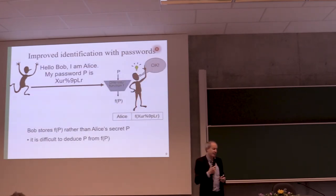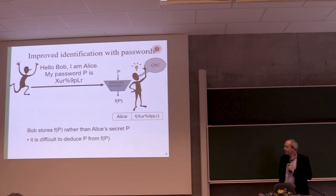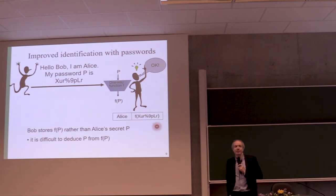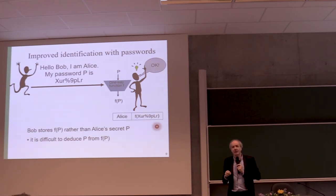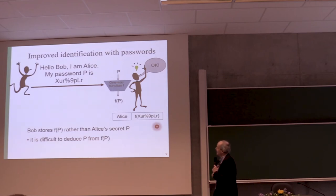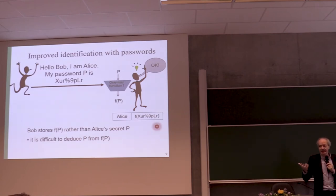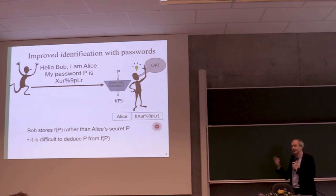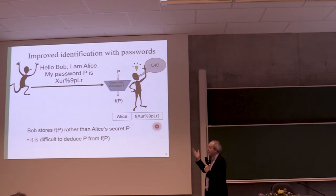A simple improvement is to not store the password in the computer but to store the hash value — put the password into a one-way function and store the result. If the database is breached, the passwords are not there, only the hashes. Of course, if your password is '123456', it won't help because the hacker will just hash that and find it. When LinkedIn was hacked and had hashed passwords, users had a few hours to change their password because the hackers had to search through big lists and could only recover some passwords. It's a very big improvement at very modest cost.